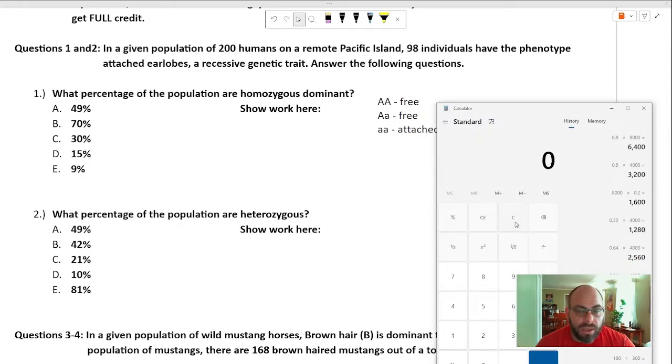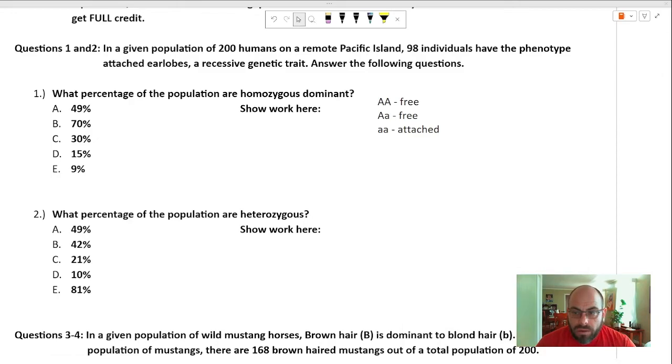And so I am told that 98 individuals out of 200 have attached earlobes, or 98 out of 200 are homozygous recessive. I know that the percentage of homozygous recessive individuals in a population is equal to q squared. And so I know that 98 divided by 200 is equal to q squared. Go back and listen to that again, slow it down if you need to. Let's do some math. 98 divided by 200 is equal to .49. And so I know that q squared is equal to .49. If q squared is equal to .49, then q is equal to the square root of .49, which is .7. And if q is equal to .7, I know that p plus q equals 1. And so if q equals .7, then p equals .3.